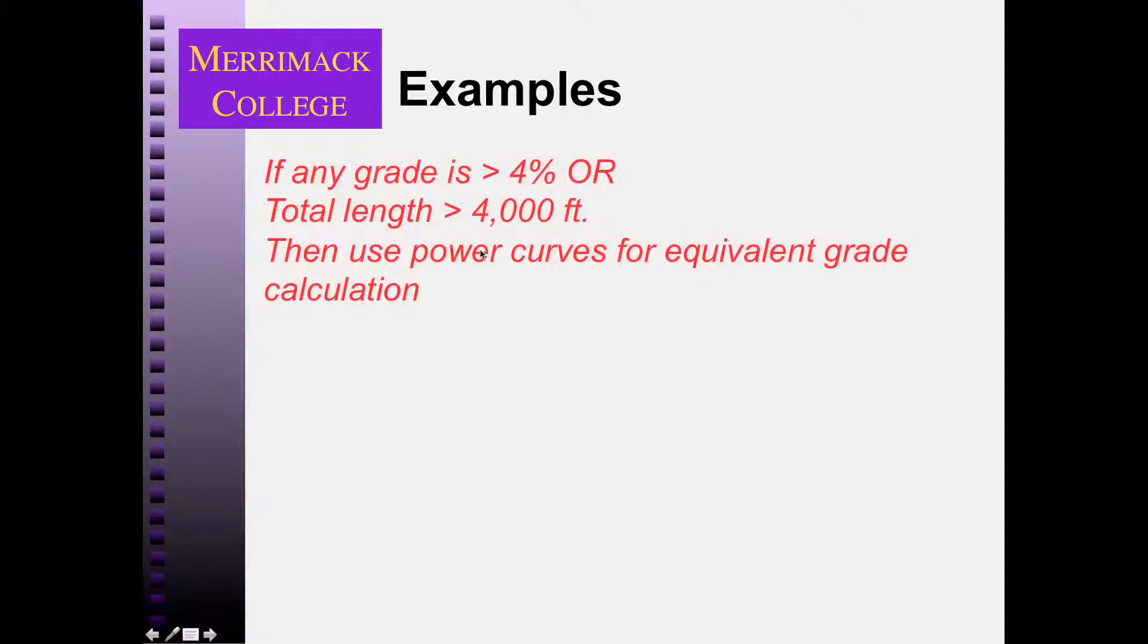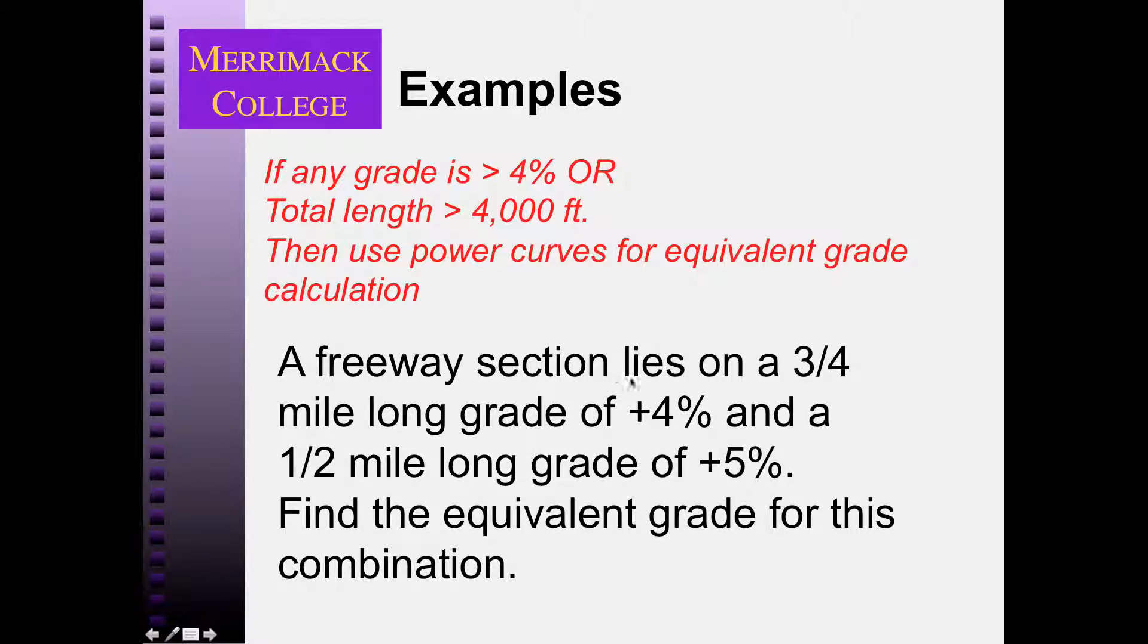So I'm going to do an example here. So we have to use the power curves under these conditions. So if the grade is, any one of the grades is steeper than 4%, or the total length is more than 4,000 feet, yeah, use the power curves. So we have a freeway section lies on three quarters of a mile of 4% grade, followed by a half mile long grade of 5%, and I want to find the equivalent grade for this combination.